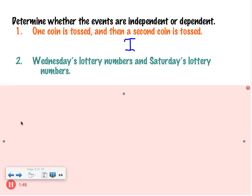Okay, the second one. Wednesday's lottery numbers and Saturday's lottery numbers. Independent, right? So it doesn't matter what they were. They're going to have the same outcome. They're not dependent on each other.